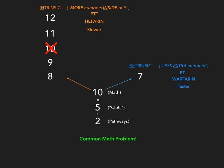Heparin will affect the intrinsic pathway and warfarin will affect the extrinsic pathway. You'll need to memorize this, but once you understand the mechanisms of heparin and warfarin it becomes easy — refer to pharmacology for that. The intrinsic pathway has a longer time to form a clot; it's a slower pathway. The extrinsic pathway is a faster pathway because there are fewer clotting factors to go through.